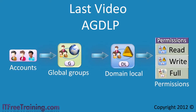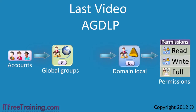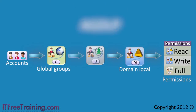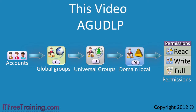AGUDLP adds universal groups between global groups and domain local groups. You now have accounts going into global groups like before, but now these global groups go into universal groups. These universal groups go into domain local groups, which are then applied to the resources as permissions. This seems like a lot of groups and complexity, and the question is: is it really worth the time and the effort?